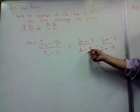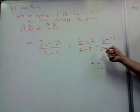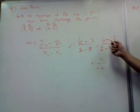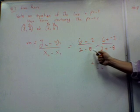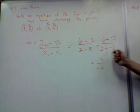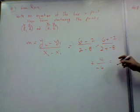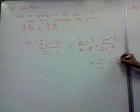2 plus negative 8. Remember, when you have subtraction of integers, you have to write it as addition of an opposite. So we end up with 4 over negative 6. And when we reduce that, what do we get? Negative 2 thirds. Negative 2 thirds, right?